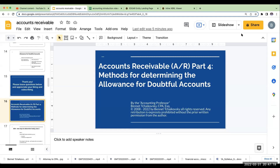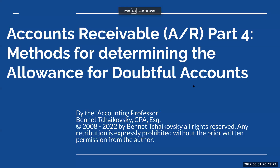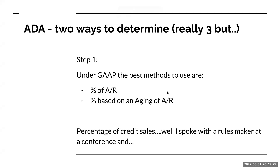Hello everybody, and welcome to accounts receivable part four. This is methods for determining the allowance for doubtful accounts. As I was mentioning this a little bit earlier, we have basically under GAAP two different methodologies.